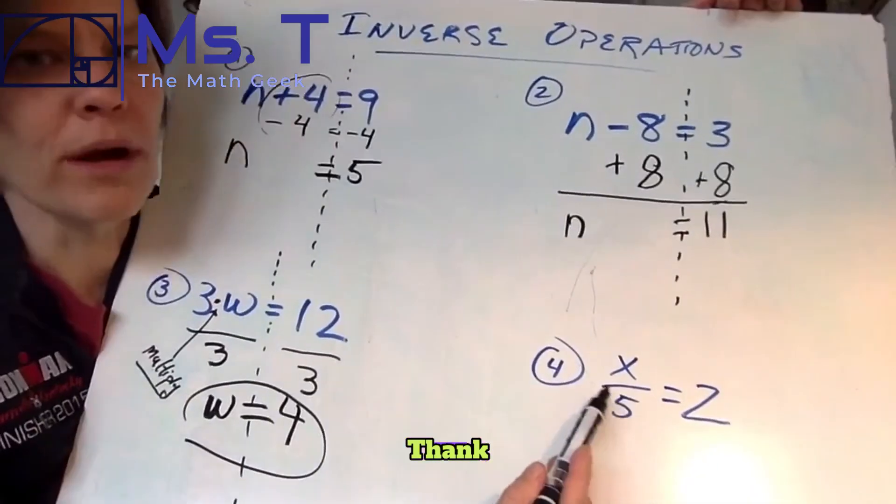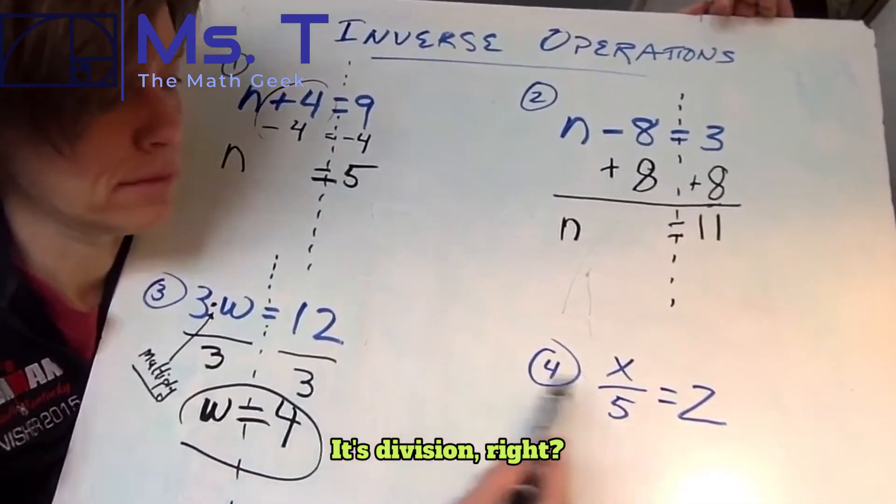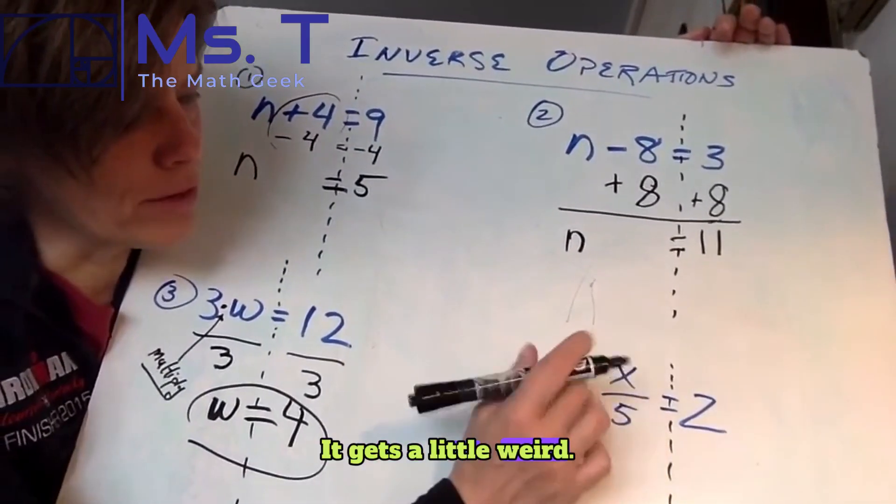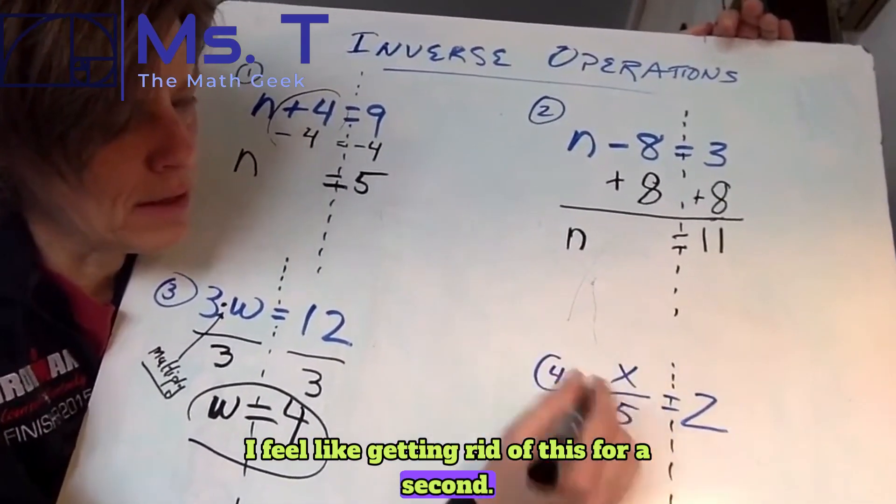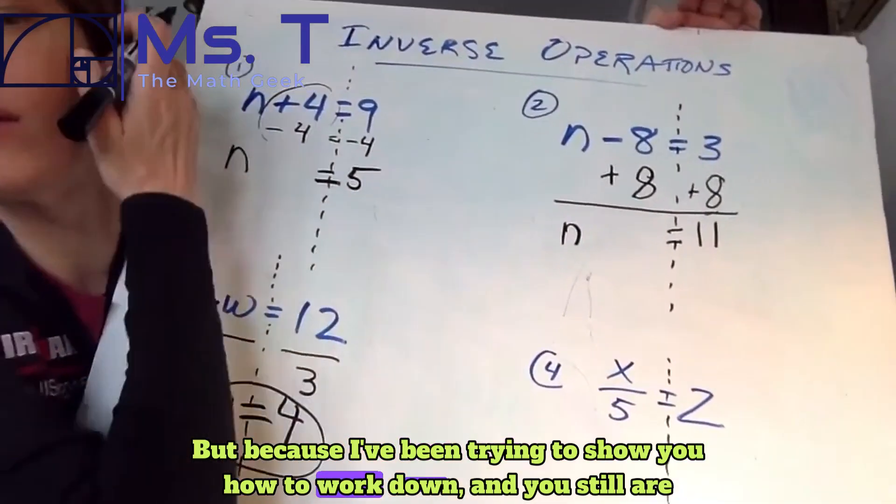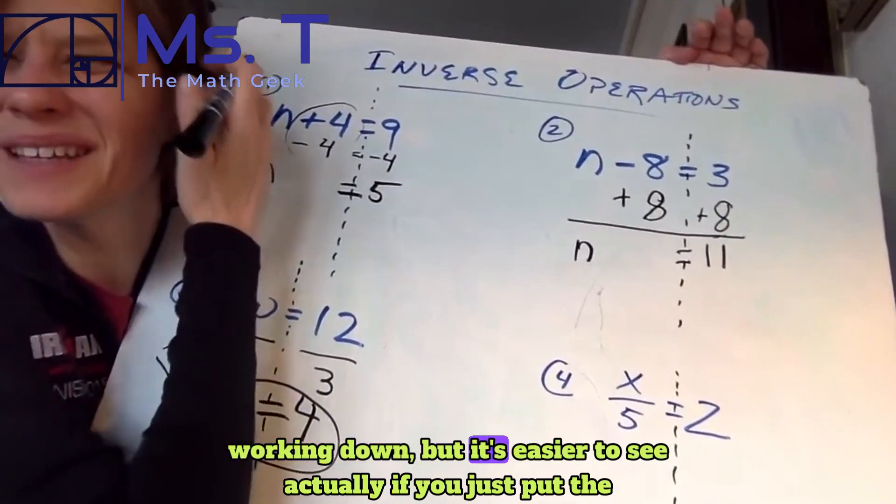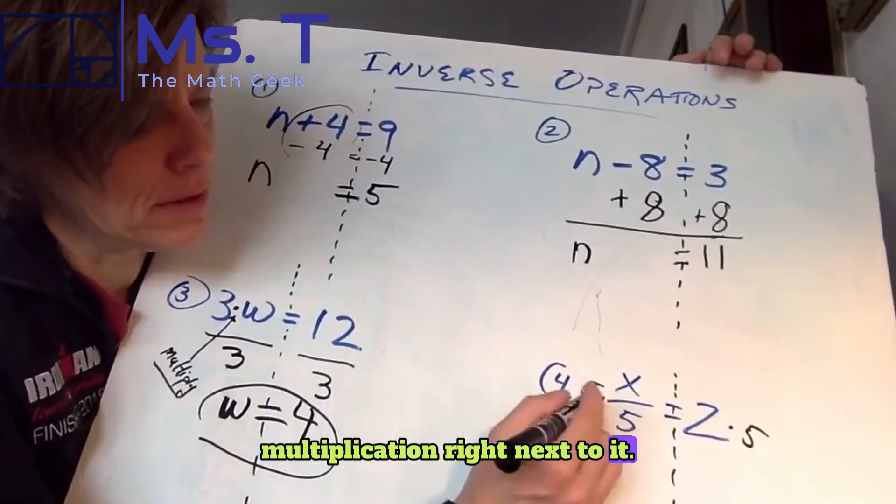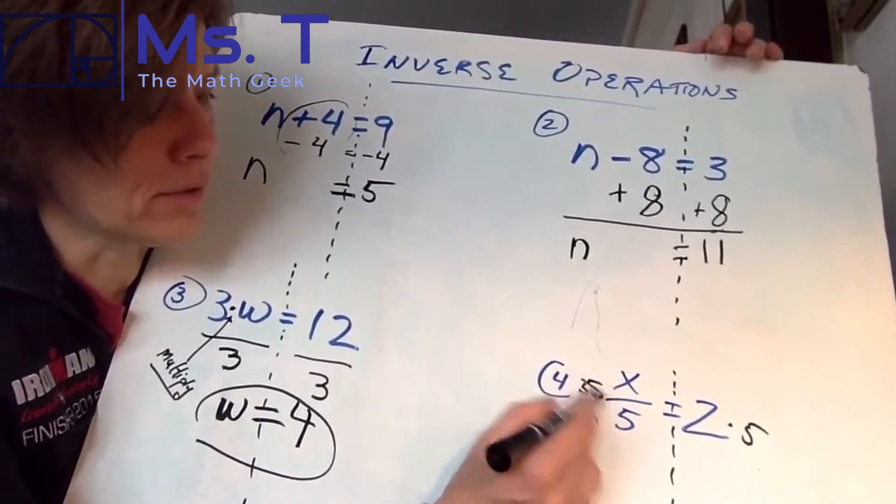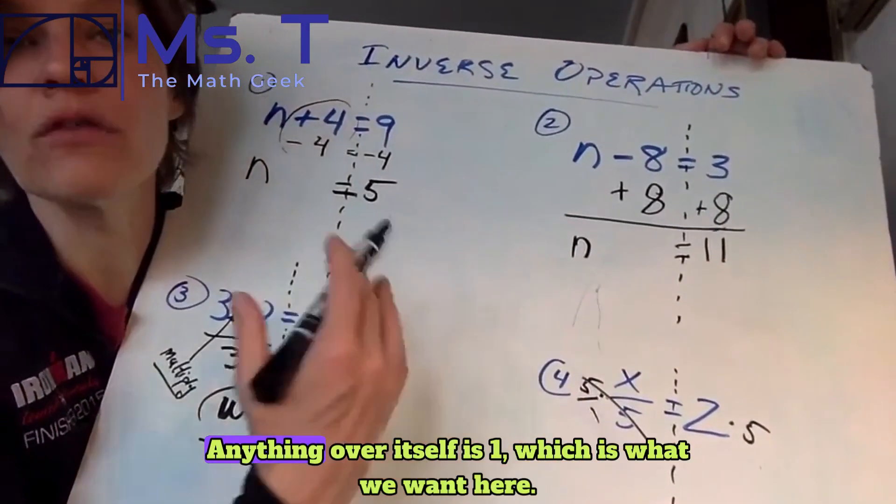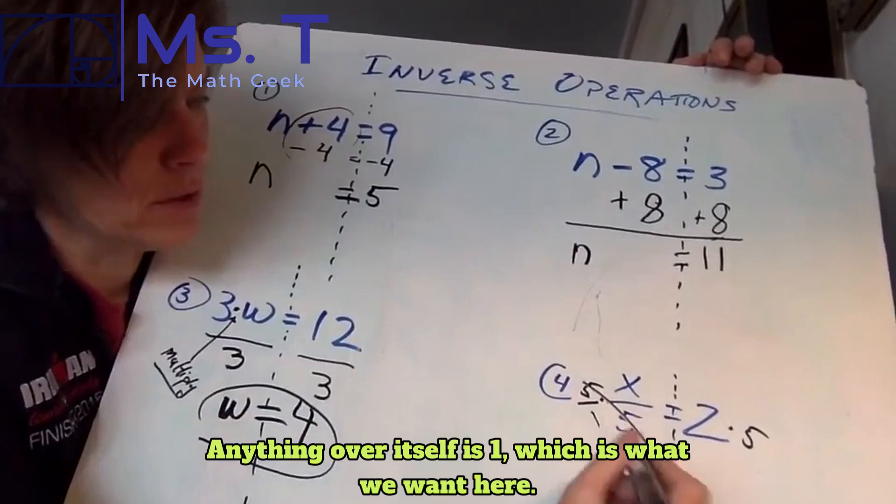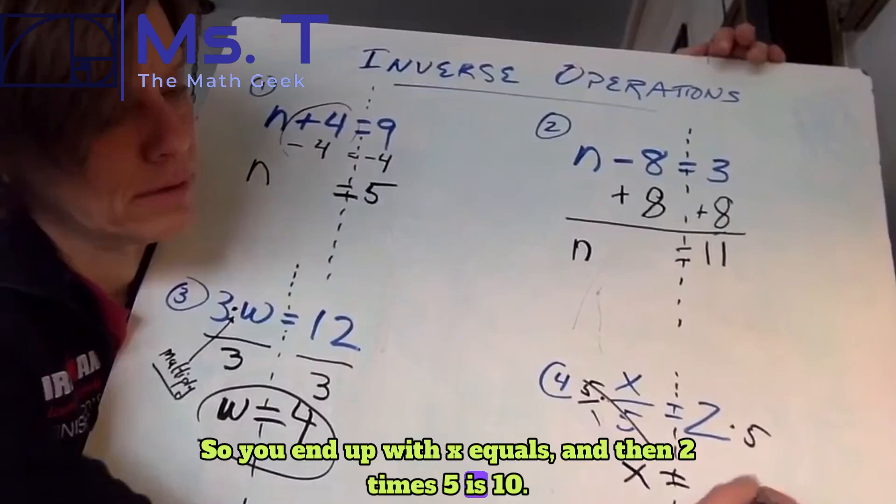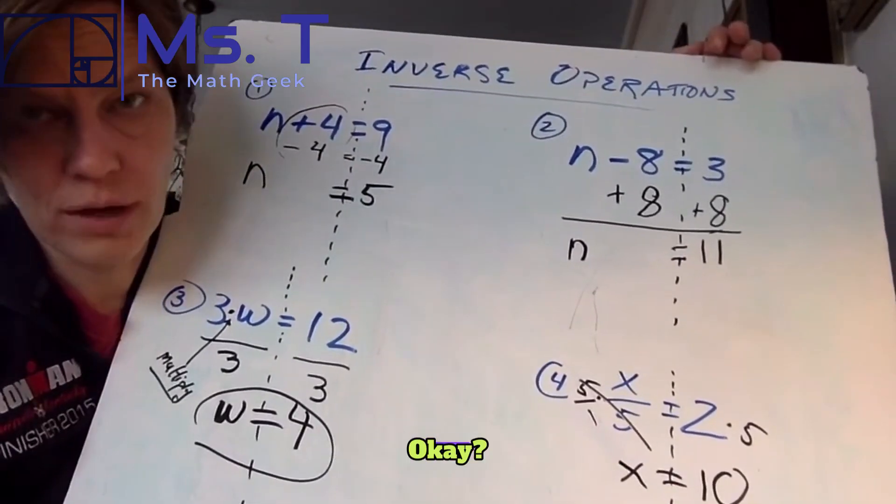All right. Let's look at our last one in the corner. What operation is this? It's division, right? So the inverse of division is multiplication. Now it gets a little weird. I feel like getting rid of this for a second. But because I've been trying to show you how to work down and you still are working down, but it's easier to see actually if you just put the multiplication right next to it. Because this is like five over one. And those cancel. Anything over itself is one, which is what we want here. So you end up with X equals and then two times five is 10. And then that's it. Done and done.